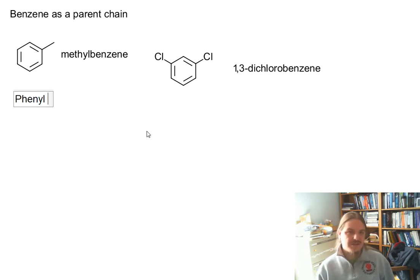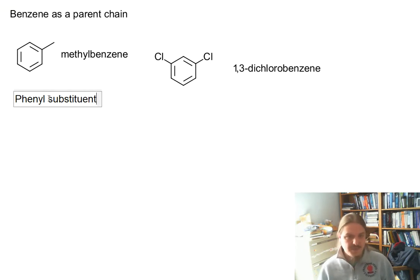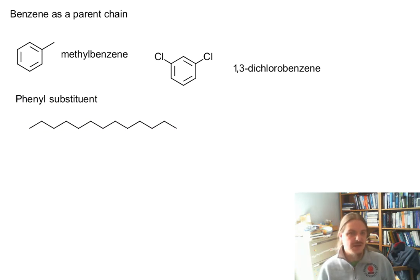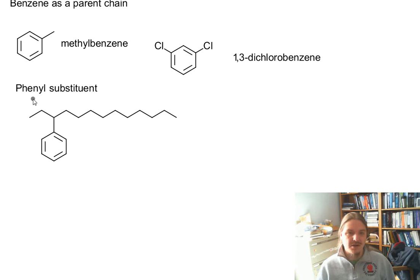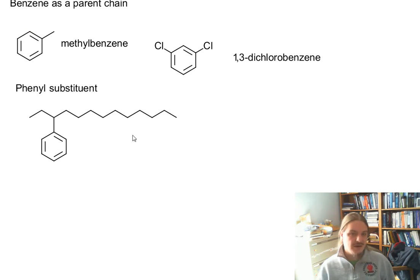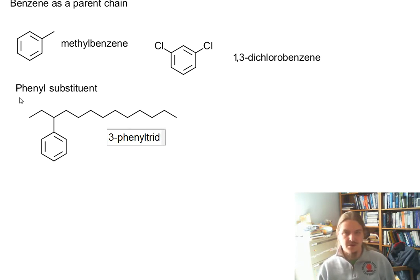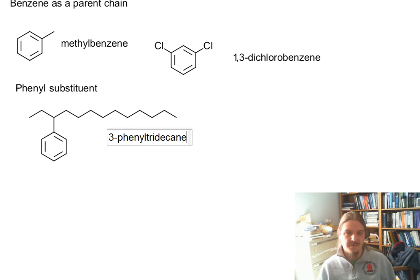When you have a side chain or something on benzene that is longer, the benzene can be named as a phenyl substituent. Here I have a long alkyl chain of 13 carbon atoms and the benzene is on carbon 3. So this is 3-phenyltridecane.